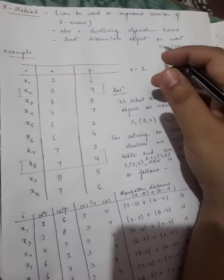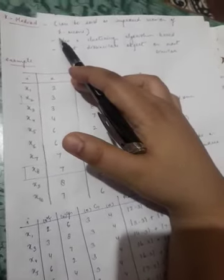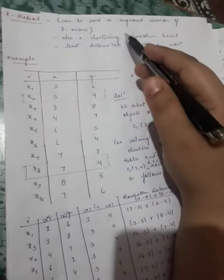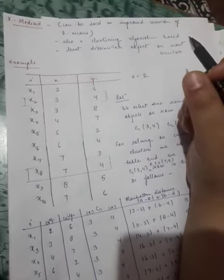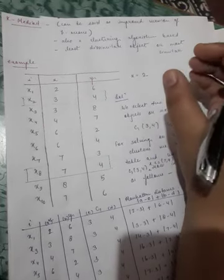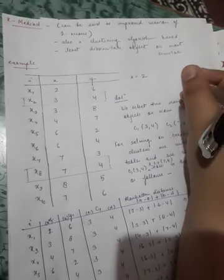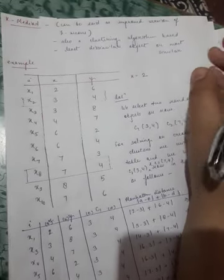In the previous lecture you studied K-means algorithm numerical, and this is now K-medioid numerical. We can say that K-medioid is the improved version of K-means. It is also a clustering algorithm based on most similar, or we can say we have to find the least dissimilar object.